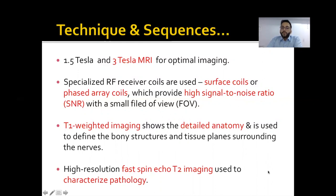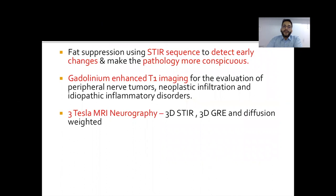High resolution and fast spin-echo T2 images are good to detect the pathology. Fat saturation techniques using FS sequences or STIR sequence, these will detect early changes of edema inflammation and they will make the pathology more conspicuous. Gadolinium-enhanced T1-weighted imaging is useful for evaluation of peripheral nerve tumors plus infiltration and in identifying idiopathic inflammatory disorders like Parsonage-Turner syndrome and so on.